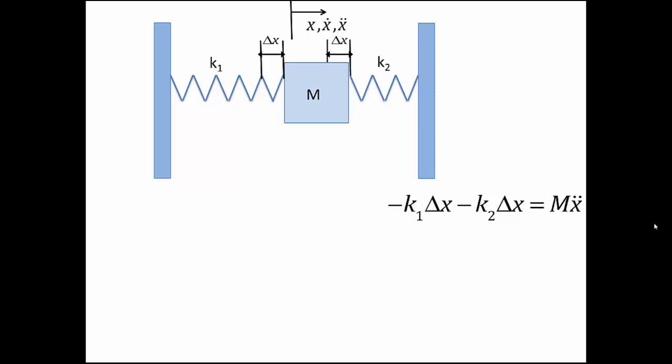We want to find out the equivalent system that has only one spring and performs the same. And for that system, we'll have an equation of motion that looks like negative k equivalent times delta x equals to m x double dot.